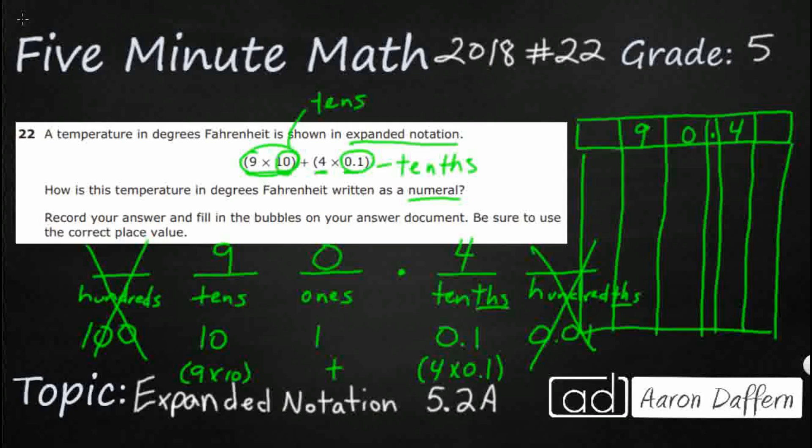Leave the hundreds and the hundredths place both blank. And then we find the 9, bubble that in. Find the zero, bubble that in. Find the 4, bubble that in. And then we get our answer, 90.4.